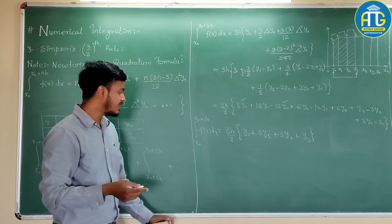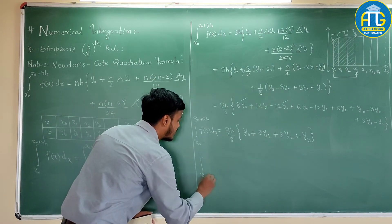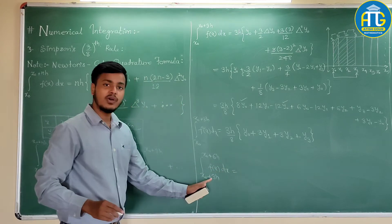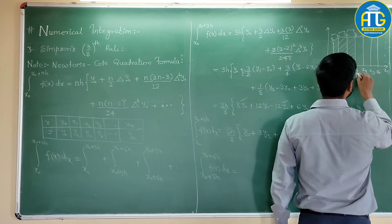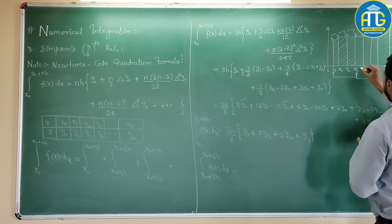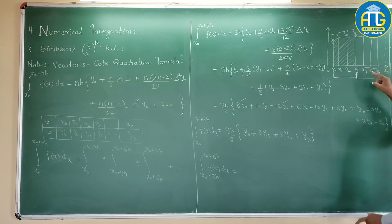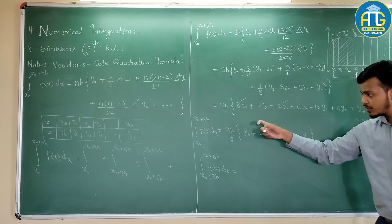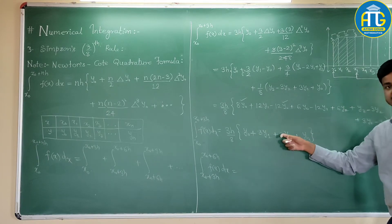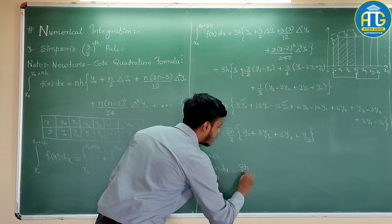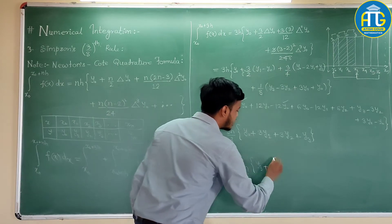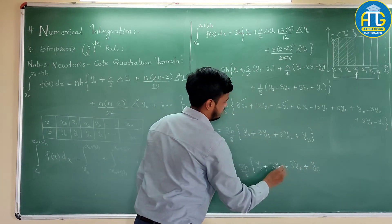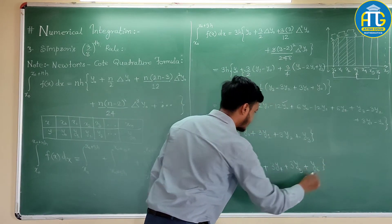Now, next we have to find out integration from x0 plus 3h to x0 plus 6h, f of x dx. And to find out this, we will take the next interval, that is from x3 to x6. So x3 to x4, one interval, x4 to x5, second, and x5 to x6, third. And as far as this expression is concerned, you just have to write down the same thing. Same thing, increment the value of this suffix is y3. So you would get 3h by 8, then here, y3 plus 3y4 plus 3y5 plus y6.